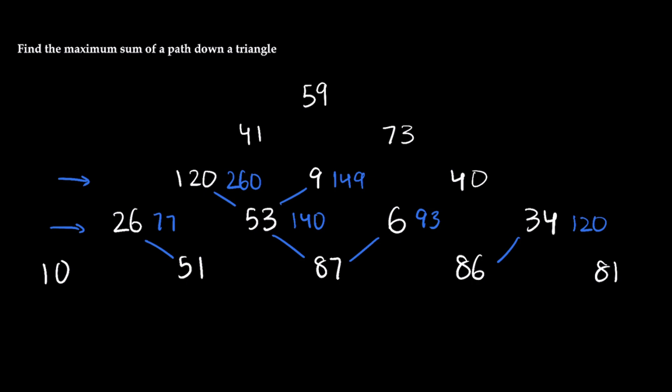And finally we have 40. So 40 can go either to 93 or to 120. Well it's better to go to 120. So we connect that and we get a path length of 160. Next we go to the previous row. So now we have 41 and 73. So 41 can either go to 260 or 149. It's better to go to the former. So 260 connects to 41. And the sum is going to be 260 plus 41 which is 301. So we'll write 301. And then 73 can either go to 149 or 160. And so it's better to go to the latter. So we'll connect those two and we should get 73 plus 160 is 233.